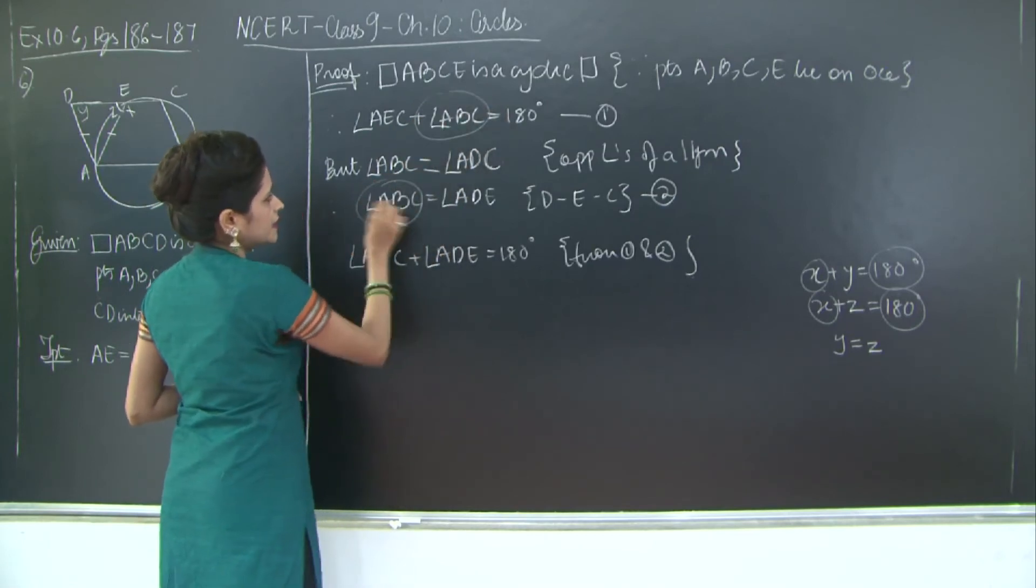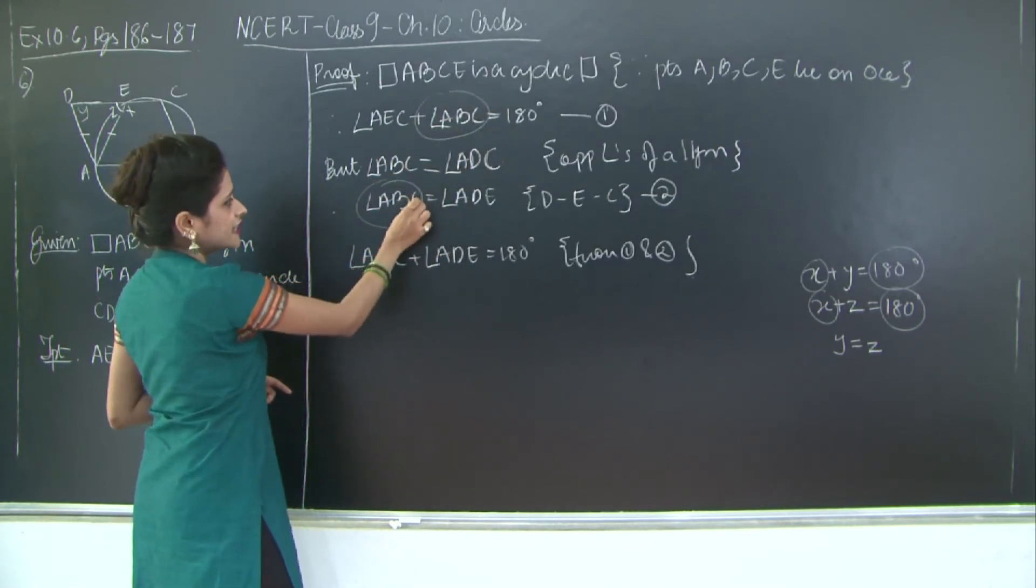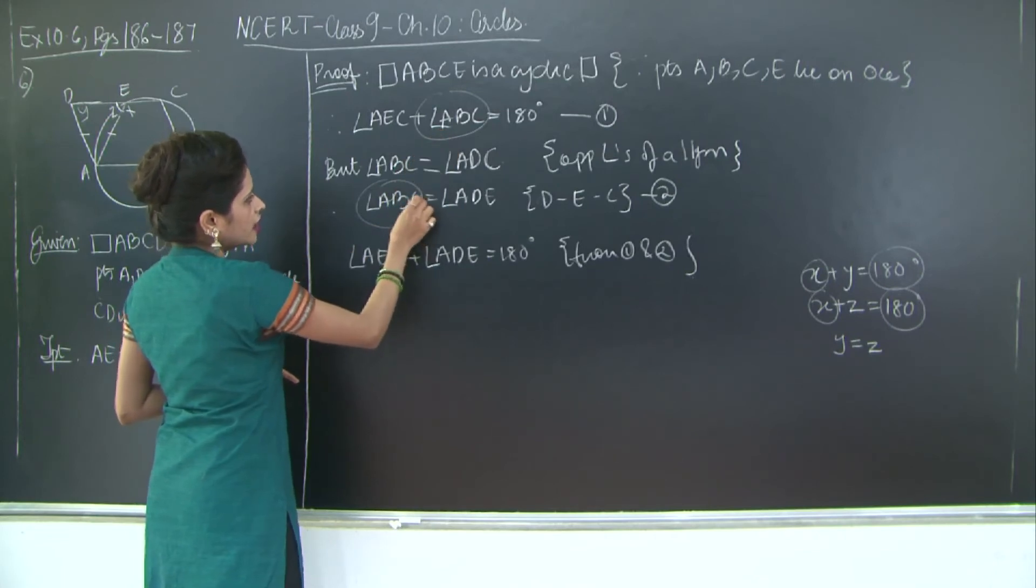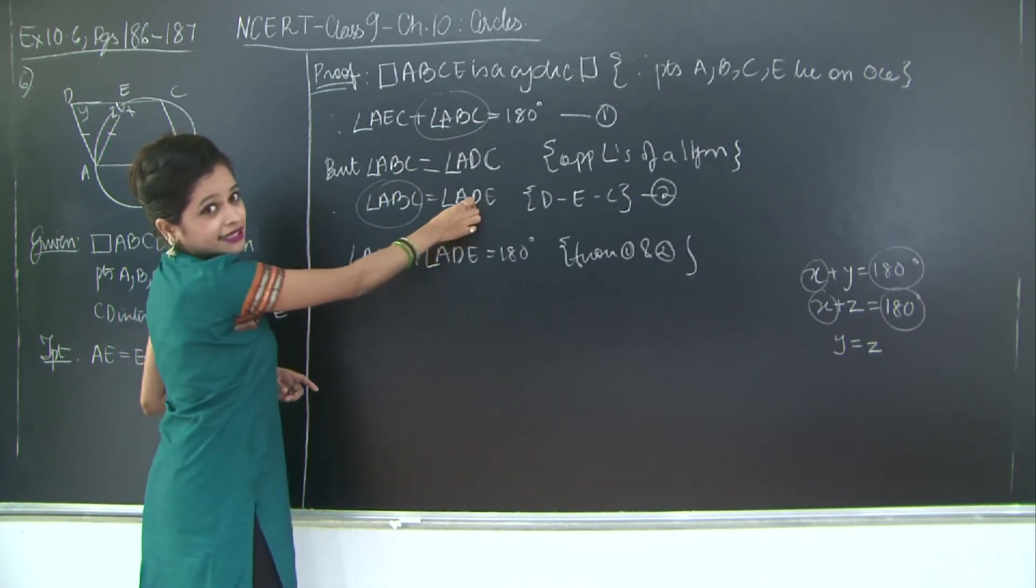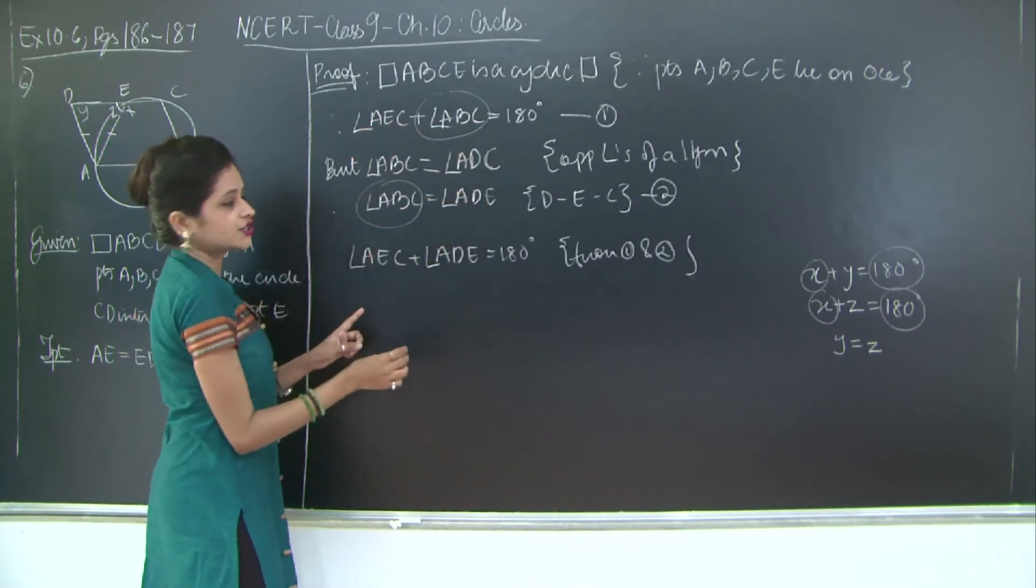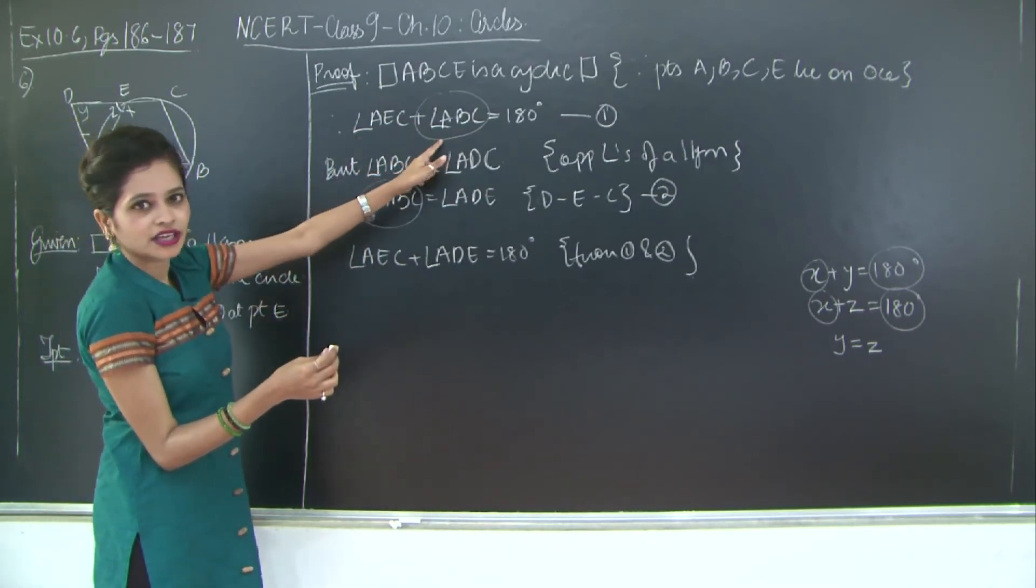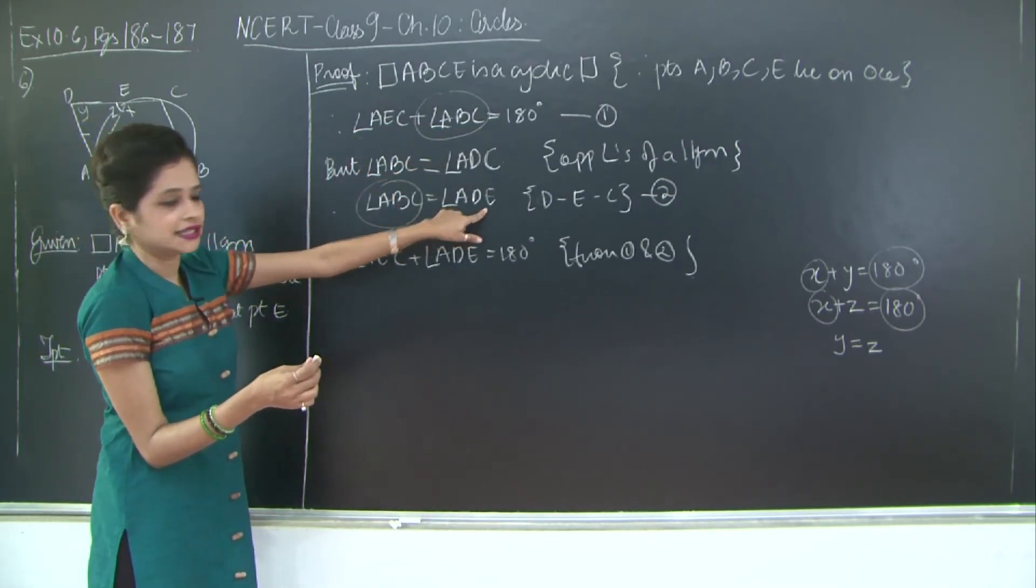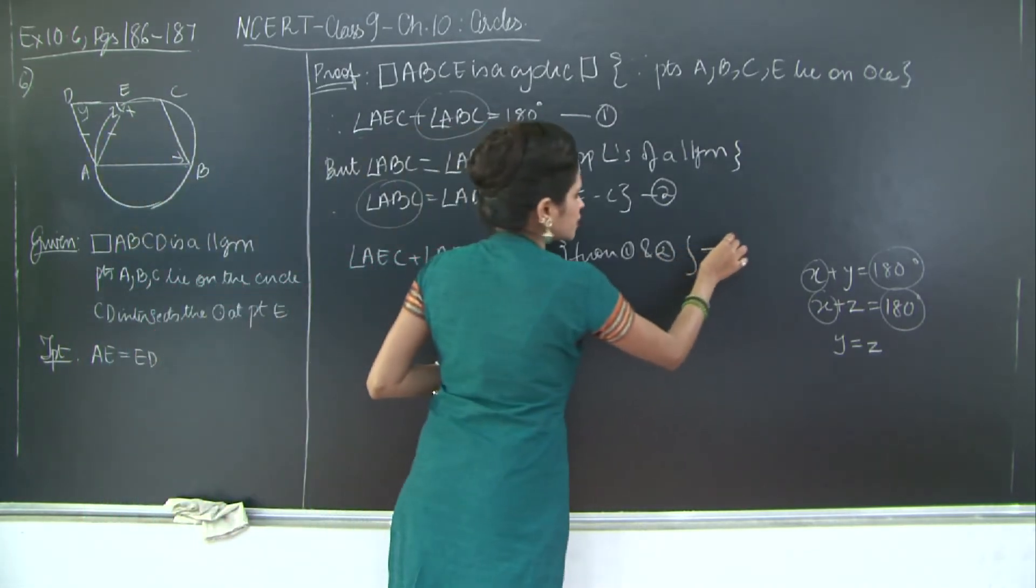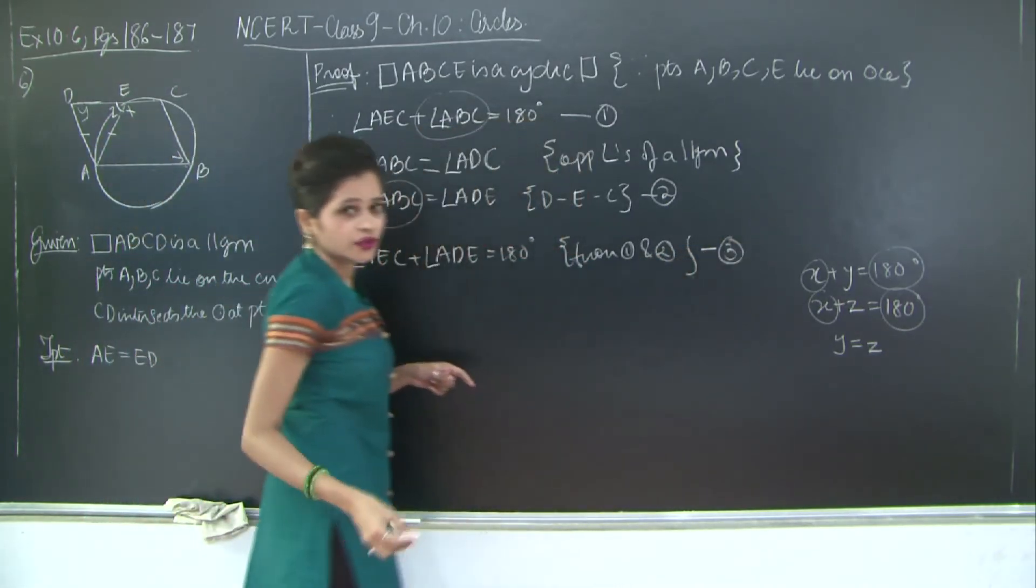So instead of ABC over here I am going to substitute ADE in this, in equation number one. So I have AEC as it is and instead of ABC I am taking ADE. Let's mark this as three. Right?